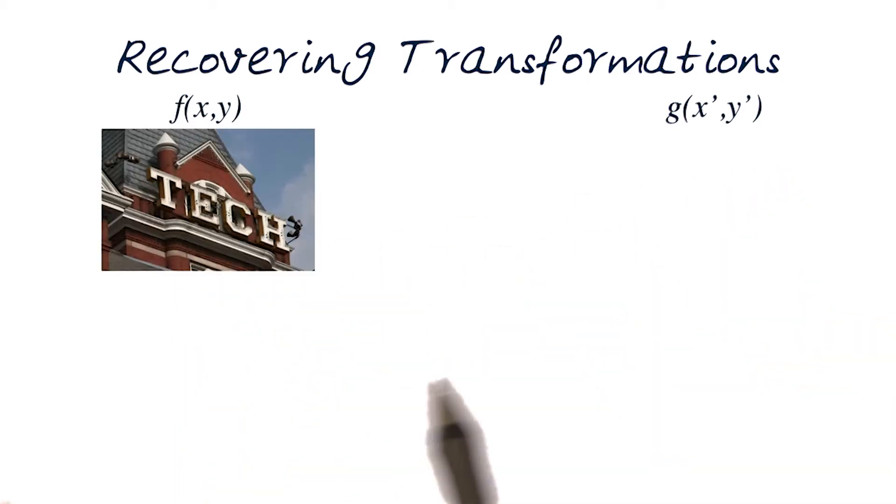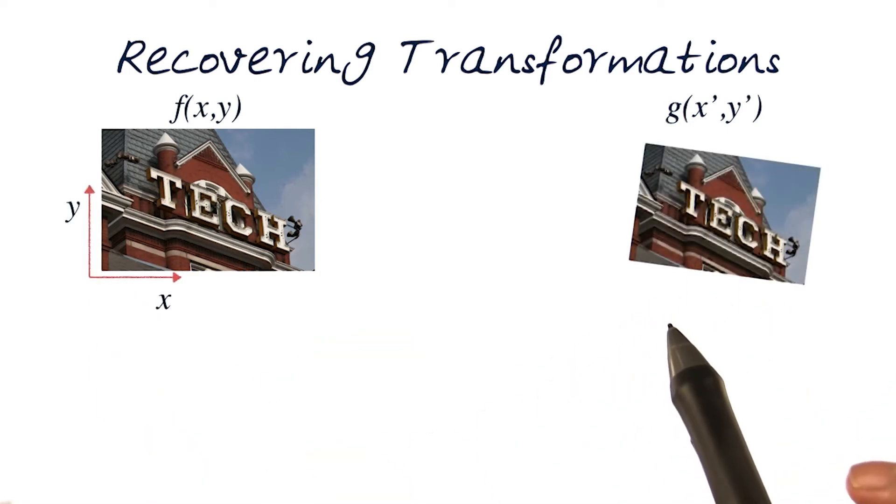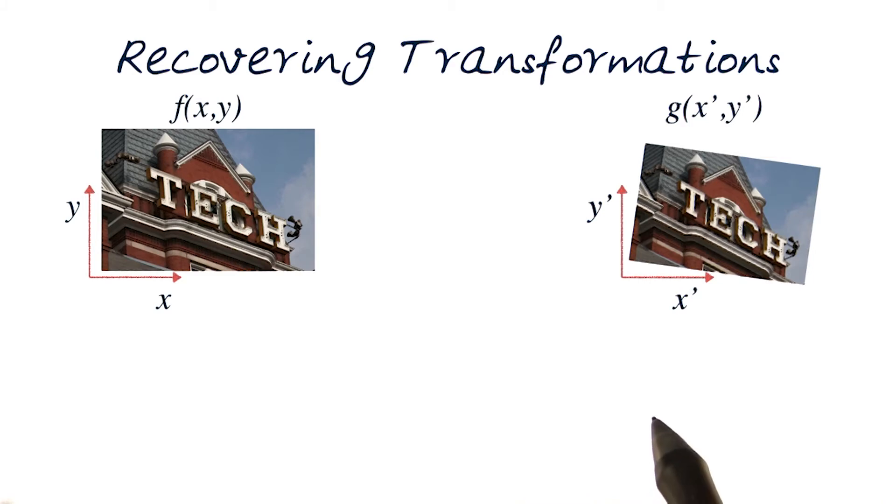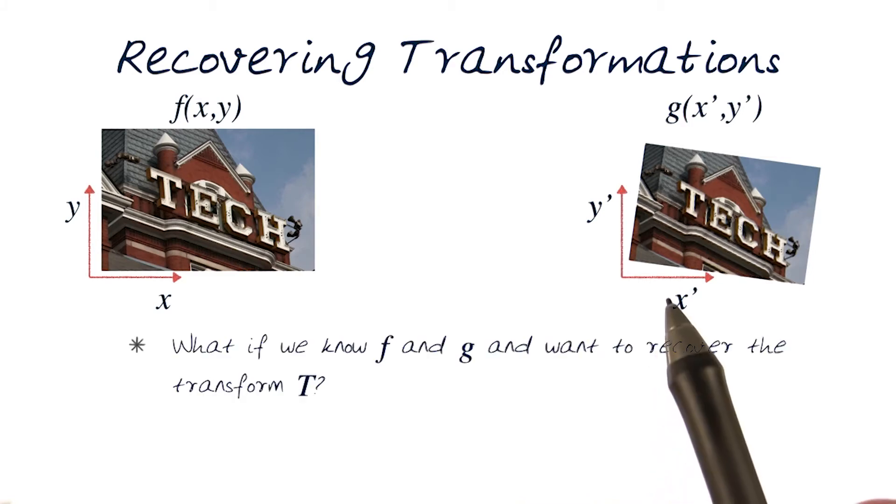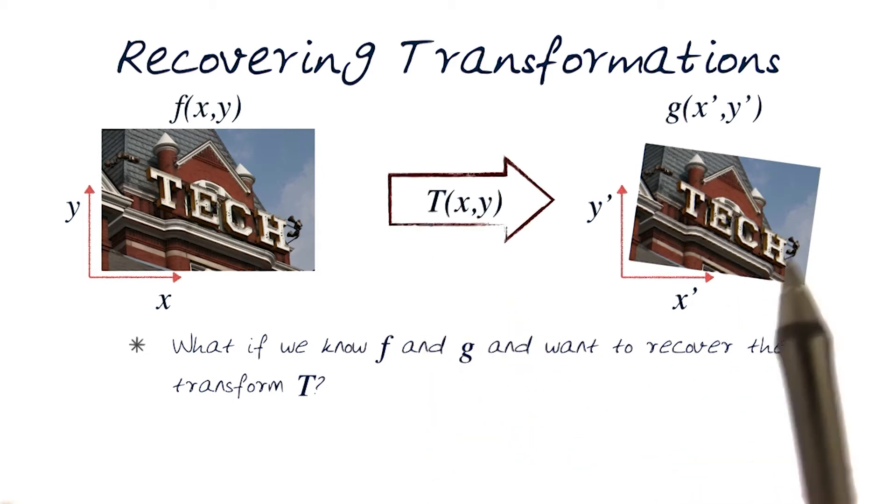So what that basically means is: given an image f and given the transformed image, I know the axes for both of them - this would be x and y, and this would be x prime, y prime. If we know what f and g are, can we recover the transformation T itself?